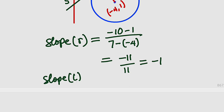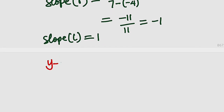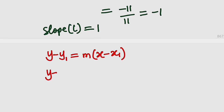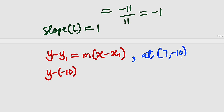The negative reciprocal of negative 1 is still negative 1, and the negative of that will be positive 1. Therefore the slope of tangent line L is equal to positive 1. To find the equation, we use y − y₁ = m(x − x₁). At the point of contact, x is 7 and y is negative 10. So we have y minus negative 10 equals 1 multiplied by x minus 7.